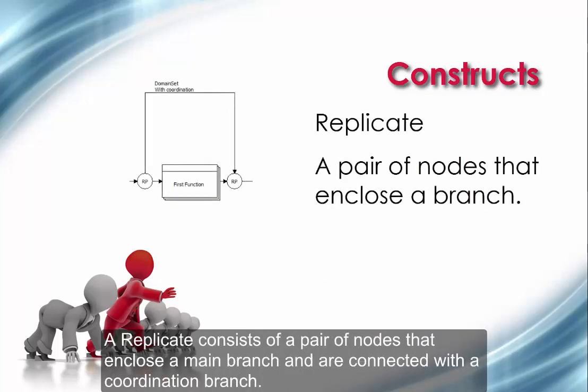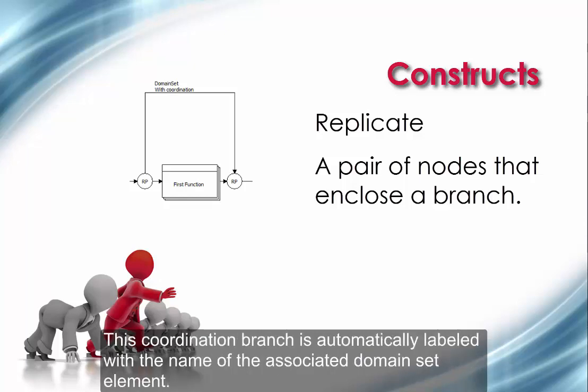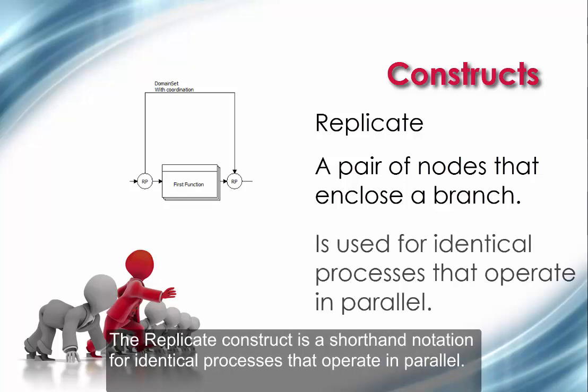A replicate consists of a pair of nodes that enclose a main branch and are connected with a coordination branch. This coordination branch is automatically labeled with the name of the associated domain set element. The replicate construct is a shorthand notation for identical processes that operate in parallel.